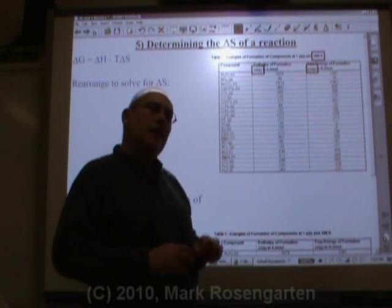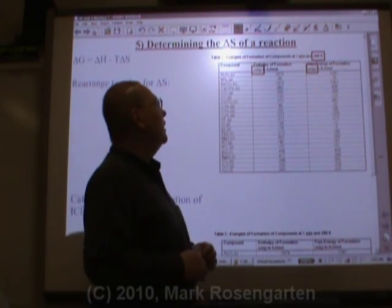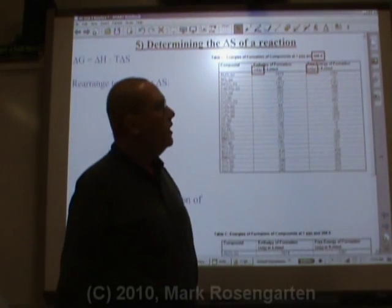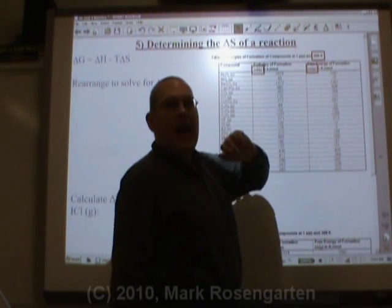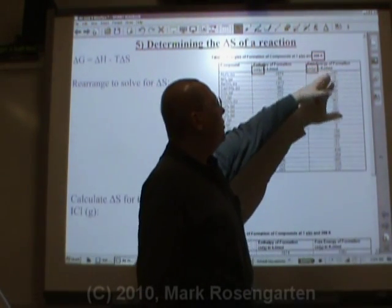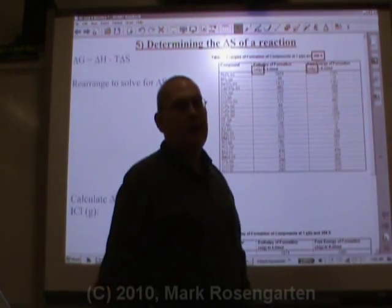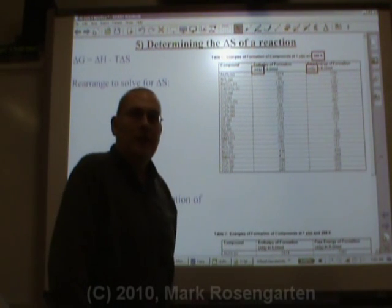Reference table C gives you three pieces of information. It tells you the delta H, it tells you the delta G, and it tells you the temperature at which the delta G is that value. What does this not give you? Delta S.